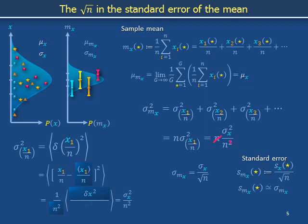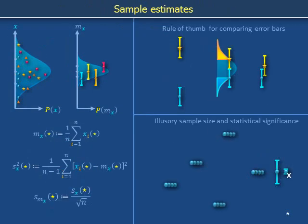That's where the square root of n comes from. Since we don't actually have σ sub x if we only have 5 stars, we use the next best thing — s sub x — to make an estimate for σ sub mx, called s sub mx, generated using s sub x instead of σ sub x. In the previous section we talked about the standard error; in the next section we will provide visual intuition for a rule of thumb used commonly to compare error bars.